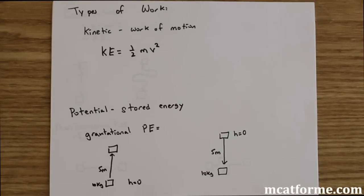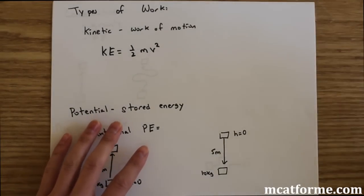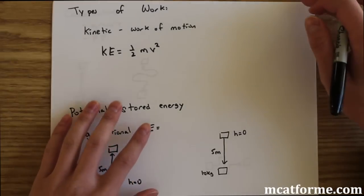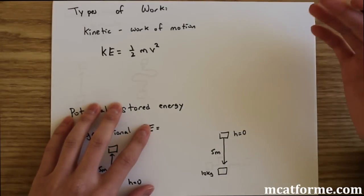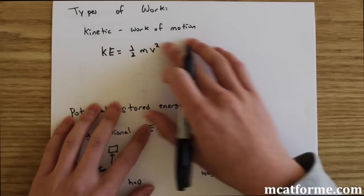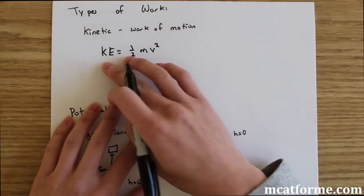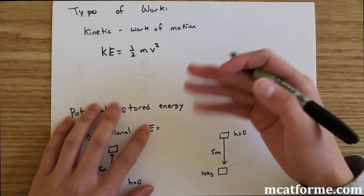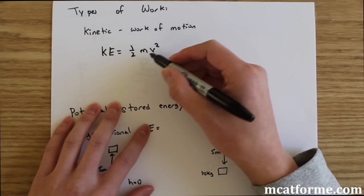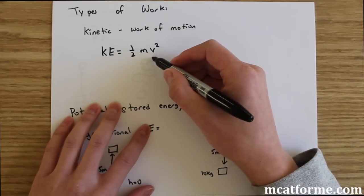This is an overview of the types of work we mentioned before. We'll be dealing with kinetic energy and potential energy. Kinetic energy is the energy of motion, and we can see this in the equation: kinetic energy equals one half mv squared, where m is the mass and v is the velocity.